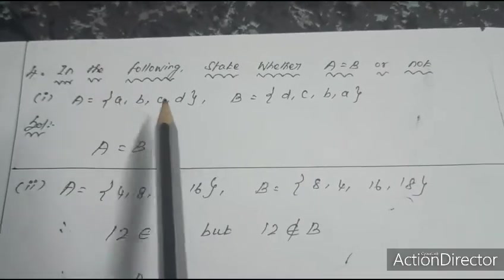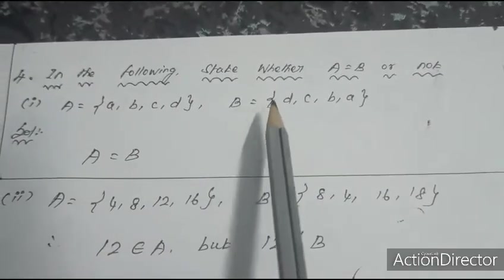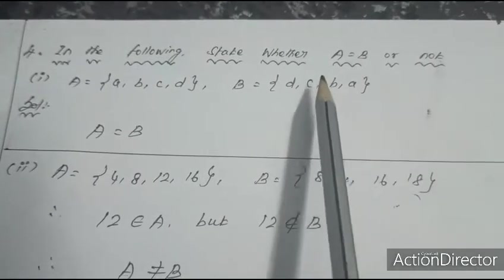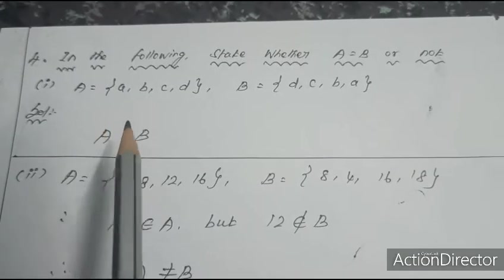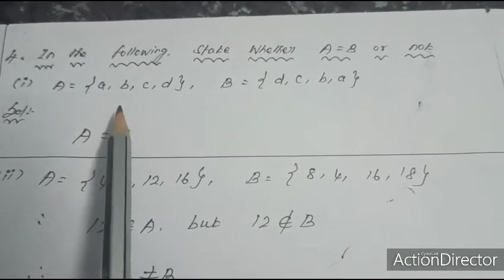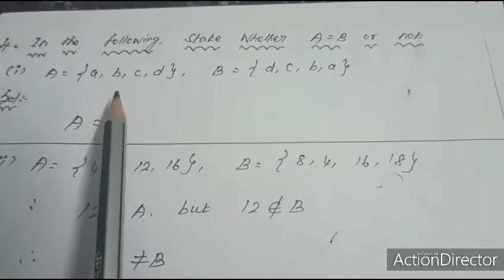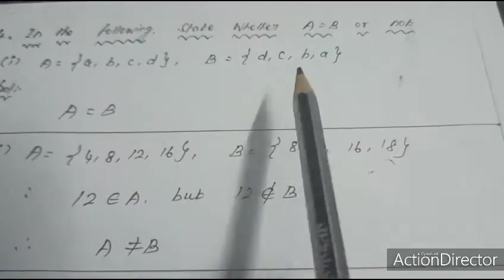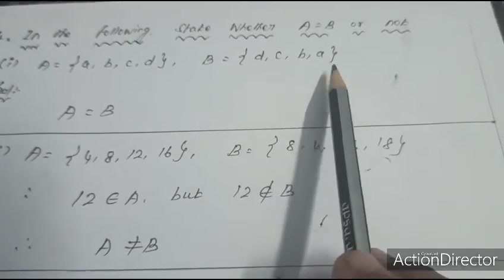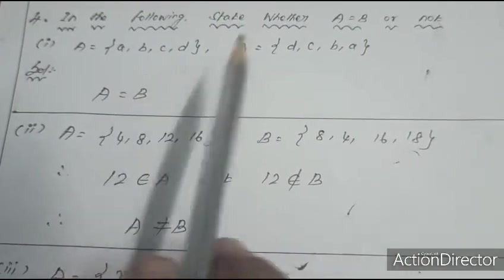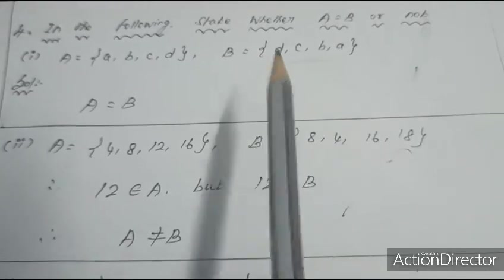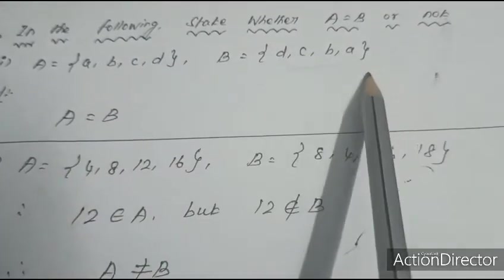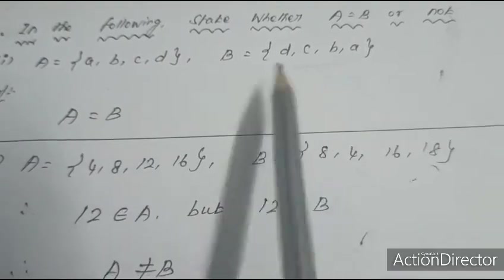Fourth question: in the following, state whether A = B or not. First: A = {a, b, c, d} and B = {d, c, b, a}. The two sets have the same elements, just with interchanged places. Comparing: a=a, b=b, c=c, d=d. Therefore A = B.